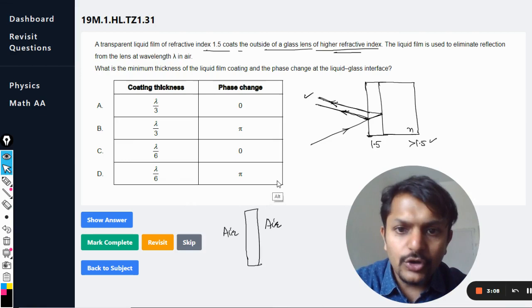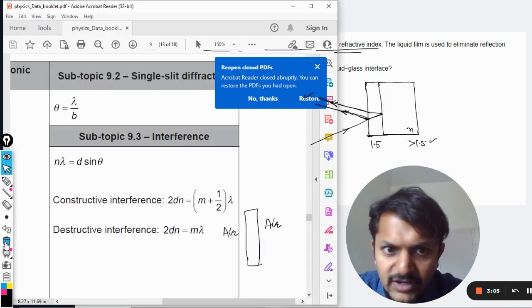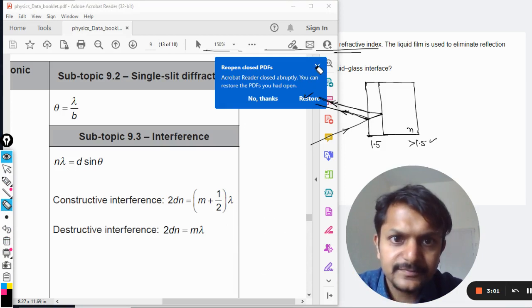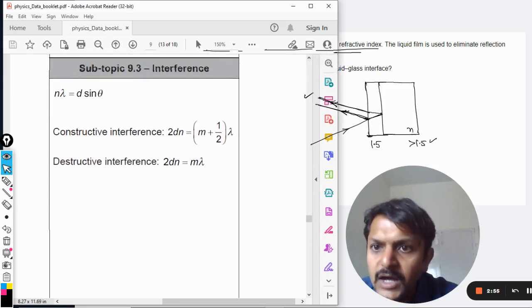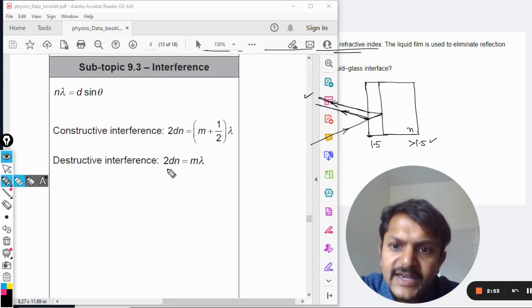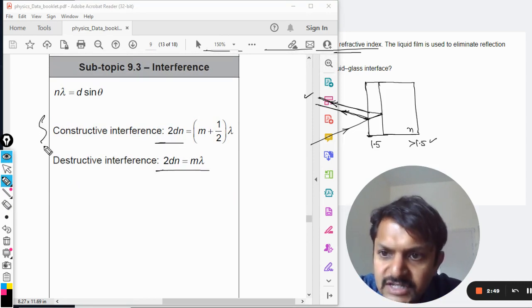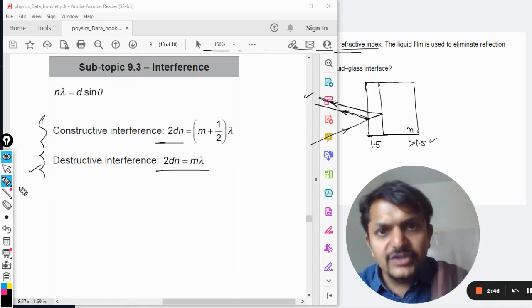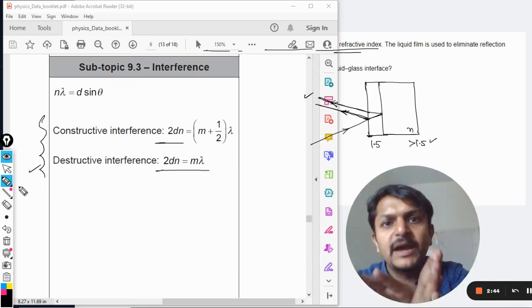Let me show you the data booklet and the formula given in the data booklet for this. This formula, so in the case of destructive interference is this, in case of constructive interference is this. So these are for thin film interference.